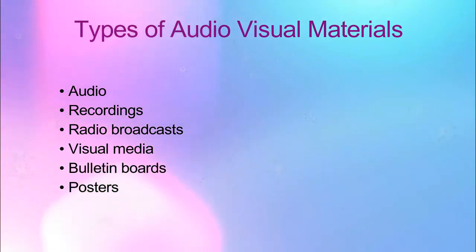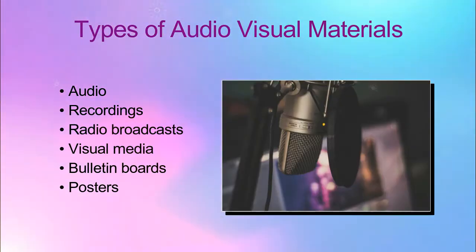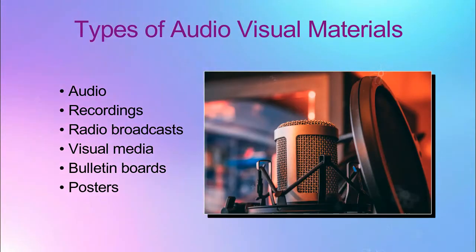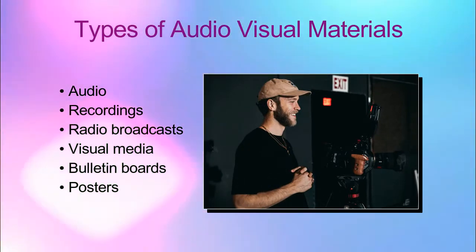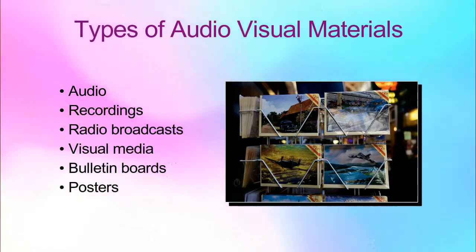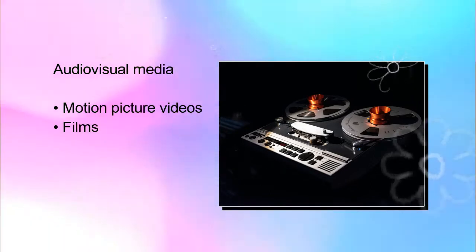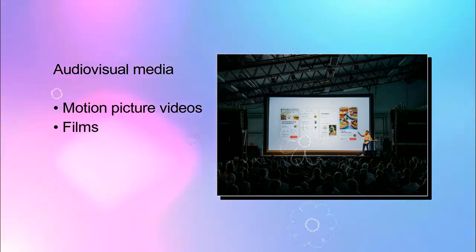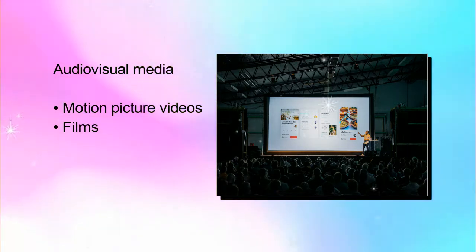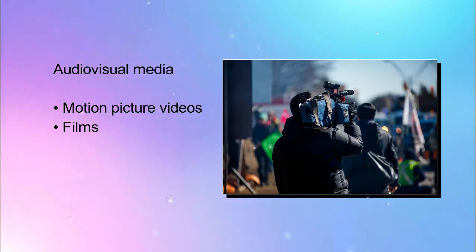Types of audiovisual materials. First is audio — sound, especially when recorded, transmitted, or reproduced. Under this are recordings and radio broadcasts. Recording is the action or process of recording your voice. The second type is visual media. Under visual media are the bulletin board, where you can post or comment about a particular issue, and the poster, which is a printed picture used for decoration. The third type is audiovisual media, which includes motion picture videos and film. Motion picture video is a sequence of images depicting people or objects in motion. Film is a flexible strip of plastic or other material for exposure in a camera, used to produce photographs or motion pictures.